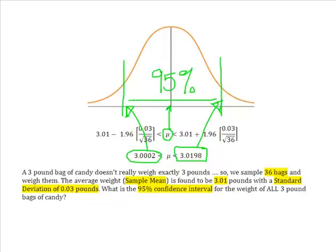And what that does is that lets me be 95% certain that the actual weight of every three pound bag of candy in the universe, if it could, every one of them could be collected up and weighed, they would all weigh between 3.0002 pounds and 3.0198 pounds. There's only a 5% chance that I'm wrong.